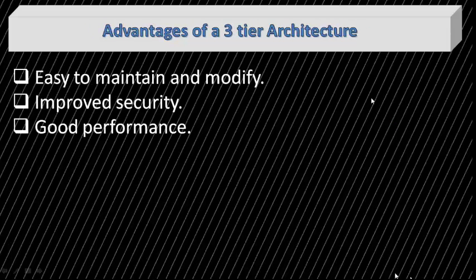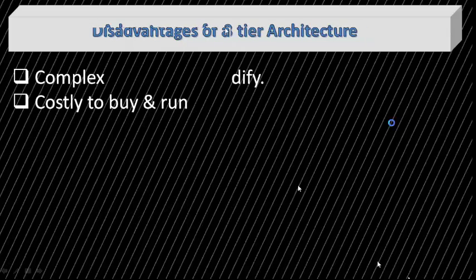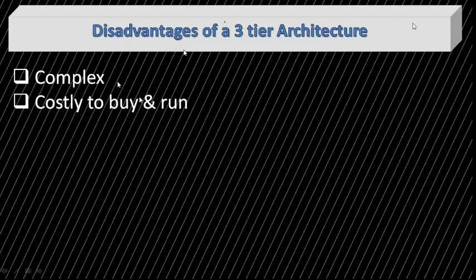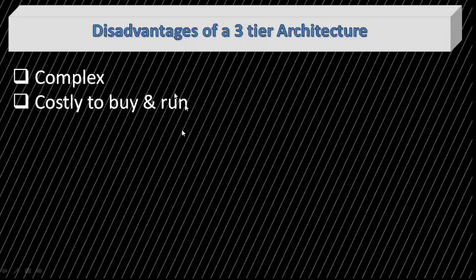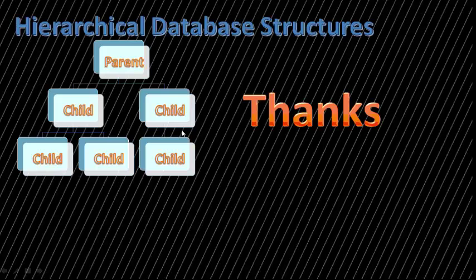The disadvantages of three-tier architecture are: it is complex in its structure and nature, making it difficult to understand. Secondly, it is costly — not only to buy but also to run. In the next video, we will learn about hierarchical database structures.